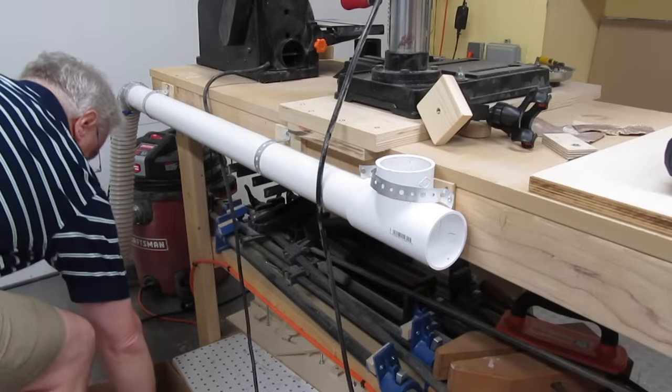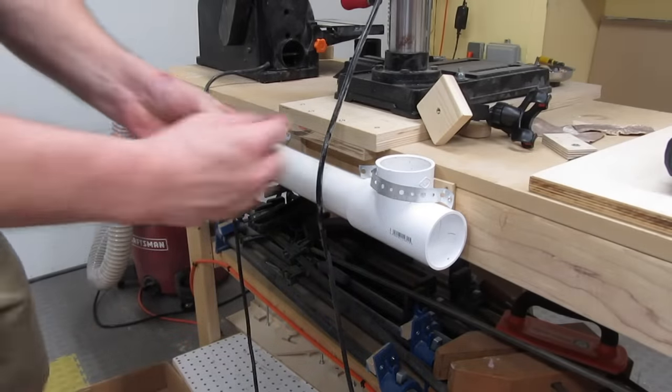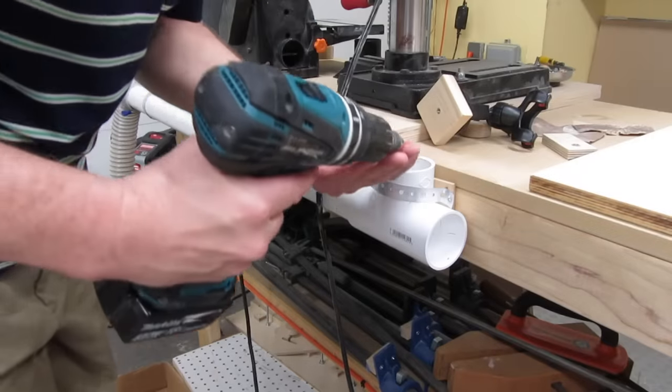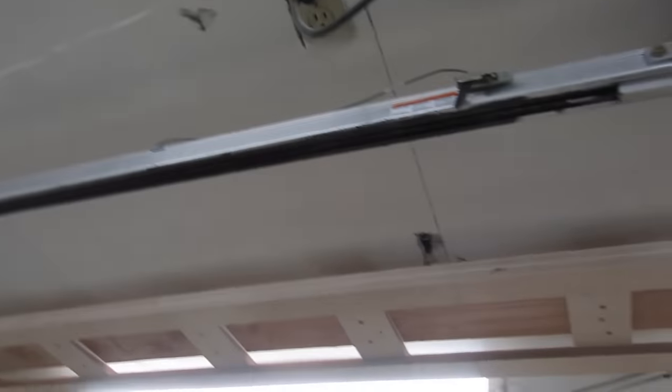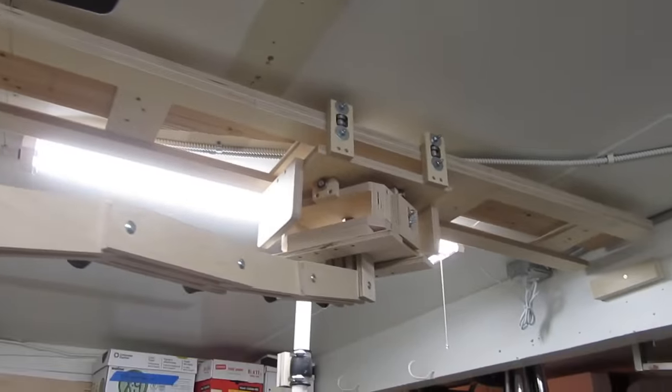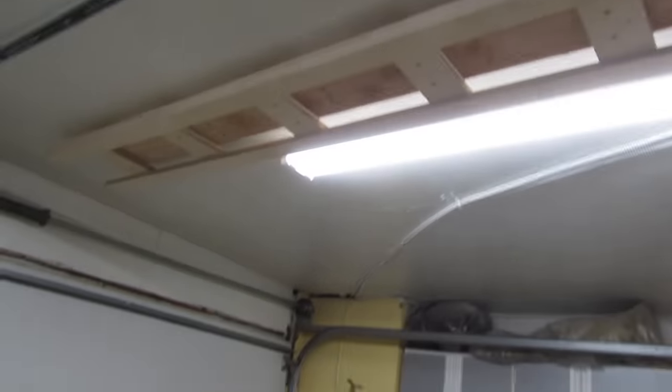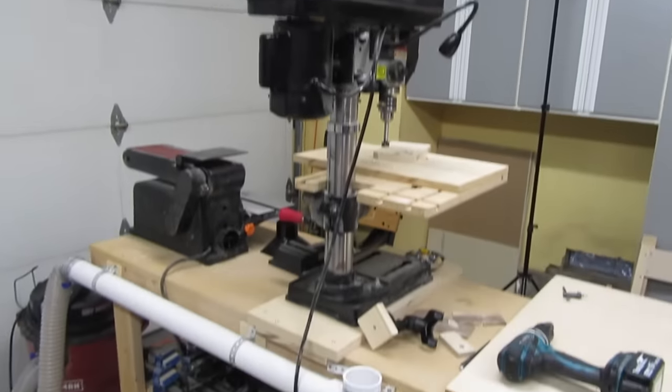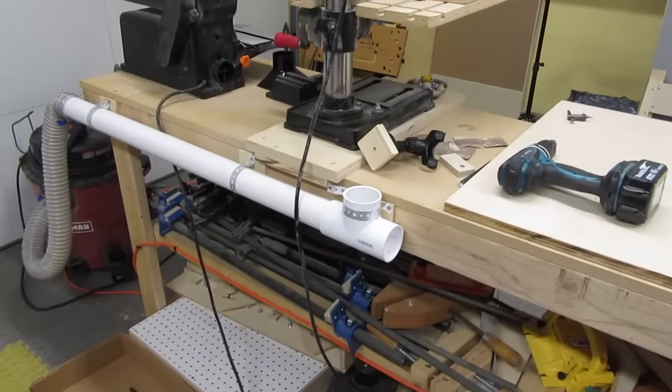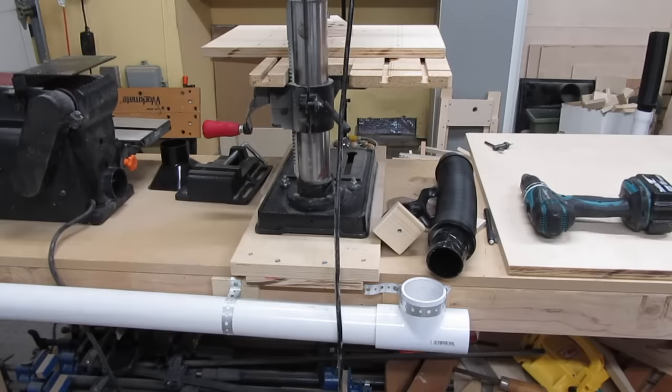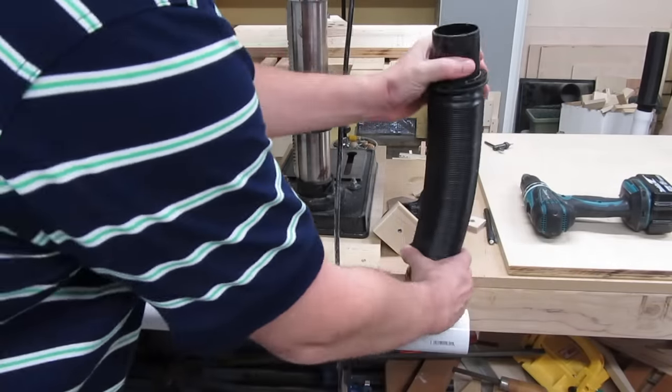I'm running some 2 inch PVC pipe along the back of my workbench. I'll connect it to my shop vac using a section of flexible hose and some clamps. In each place where I want to connect to a power tool, I need a drop. The term drop comes from the idea that dust collection pipes are often attached to the ceiling, and when you need to connect a power tool, you drop a pipe or hose down from the main pipes on the ceiling.